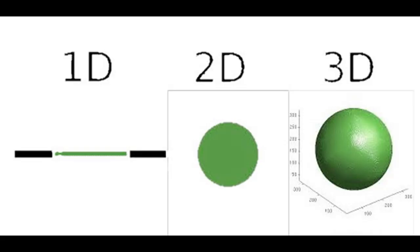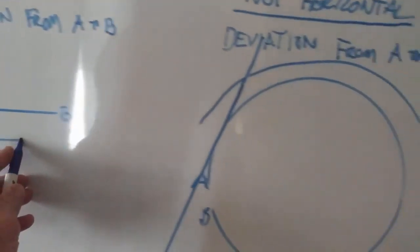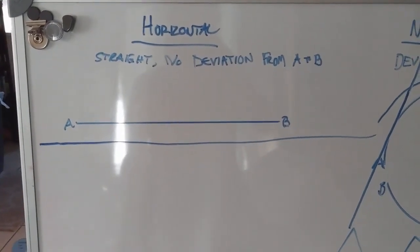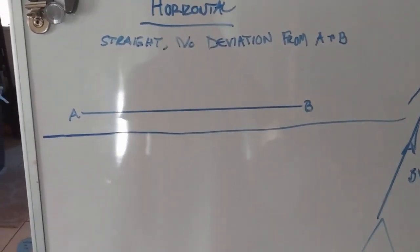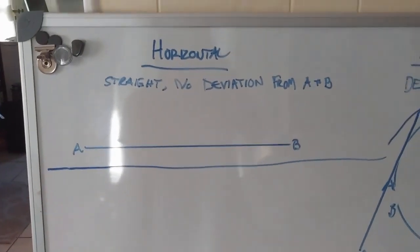2D lines do exist. Whoever said they didn't? They are no less real than 1D or 3D lines. There's no deviation in elevation because it's parallel to the flat ground below it. It's both parallel to the ground and straight. Mind blown, right?